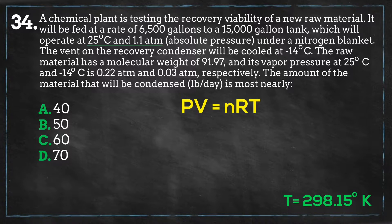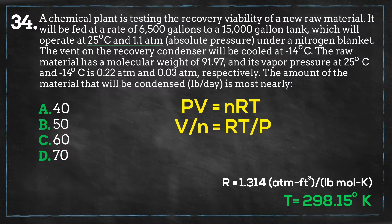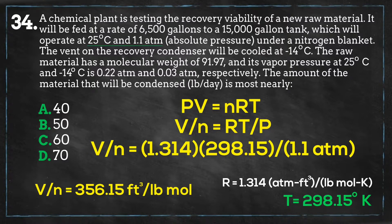There are several R constants you can use for the equation, and our eventual answer is desired in pounds per day, so it will be beneficial to see how much volume our material will take up in a unit similar to our final answer. The R constant closest to the units of our final answer is 1.314 atm·cubic feet per pound-mole·Kelvin. Remember that the pounds in a pound-mole is equal to a material's molecular weight, similar to it being the amount of grams in a gram-mole. Plugging our information into the ideal gas law, we calculate that 1 pound-mole of material in the tank will take up 356.15 cubic feet of volume.